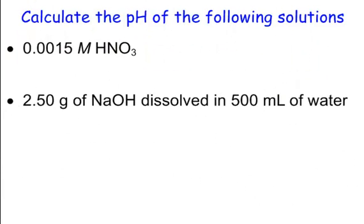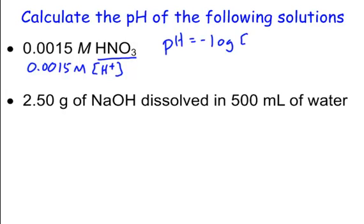Here's an example — grab a calculator. We have HNO3, a strong acid, so we can use pH calculations right away. Because a strong acid dissociates completely, 0.0015 M is the concentration of H+. So pH = -log(0.0015), and plugging that into a calculator gives a pH of 2.82. Always round your pH to two decimal places, because that's how pH meters report it.